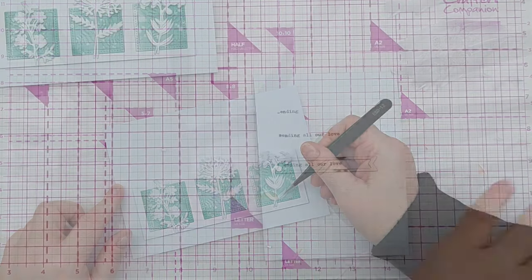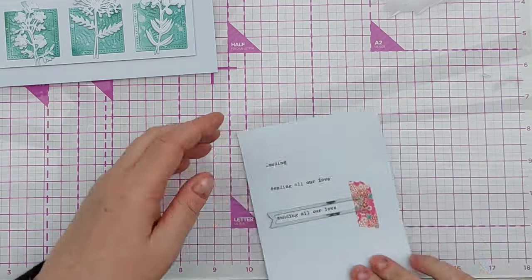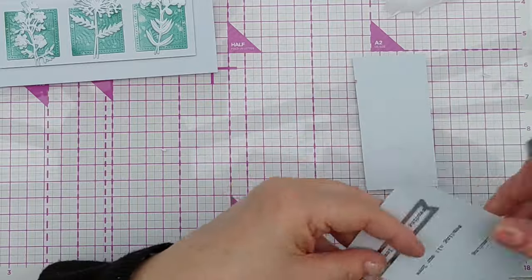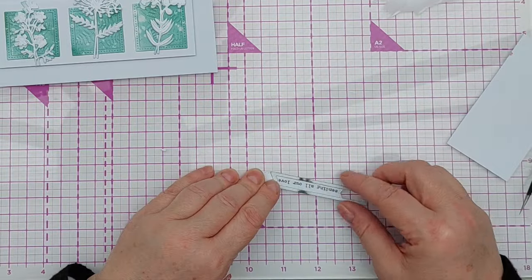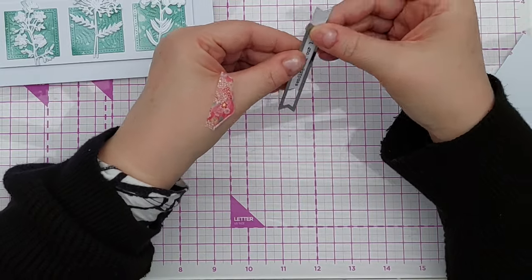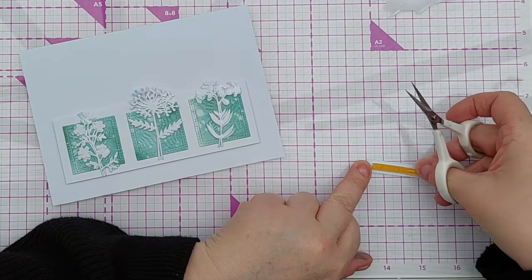For my sentiment I used my typewriter to type out 'sending all our love' and then I used a stitch banner die to cut it out. The banner die was a bit long though so I simply shuffled it along the die cut a bit and then ran the whole thing through my mini Gemini again to cut it to the correct length.